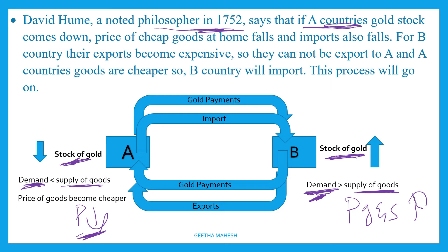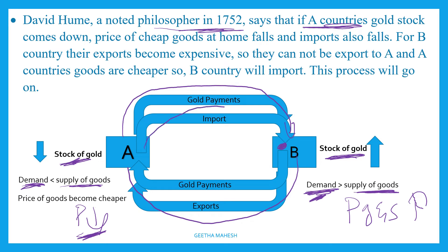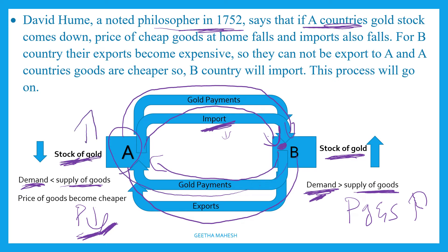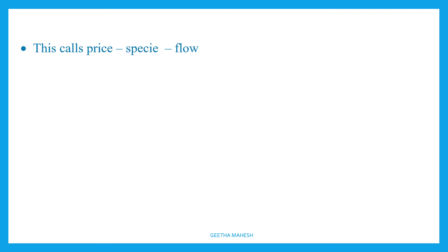Goods and services in Country A become available at a cheaper rate, while in Country B they become expensive, as demand exceeds supply. So the situation reverses: previously Country B was exporting, but now Country B will start importing from Country A because goods are cheaper there. Country B makes payment in gold, so gold flows back to Country A and Country A's gold stock increases. David Hume called this the price-specie flow mechanism.